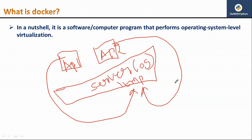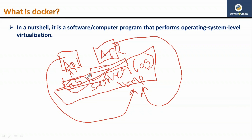However, if you go with Docker — suppose you install application one using Docker and application two also using Docker — then whenever you deploy your application using Docker, Docker will provide virtually one operating system for that application. Actually it is your base operating system only, but your application will feel that there is a separate operating system for it, meaning there is one temp folder. For application two as well, Docker will provide a different virtual operating system with its own temp folder.